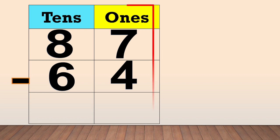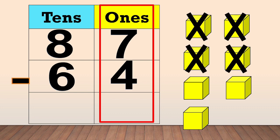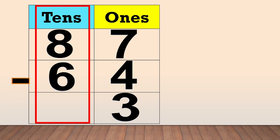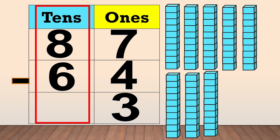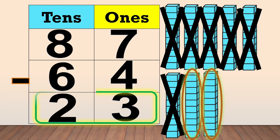Next, we subtract the ones. 7 ones minus 4 ones equals 3. Then subtract the tens. 8 tens minus 6 tens equals 2. Our final answer is 23.